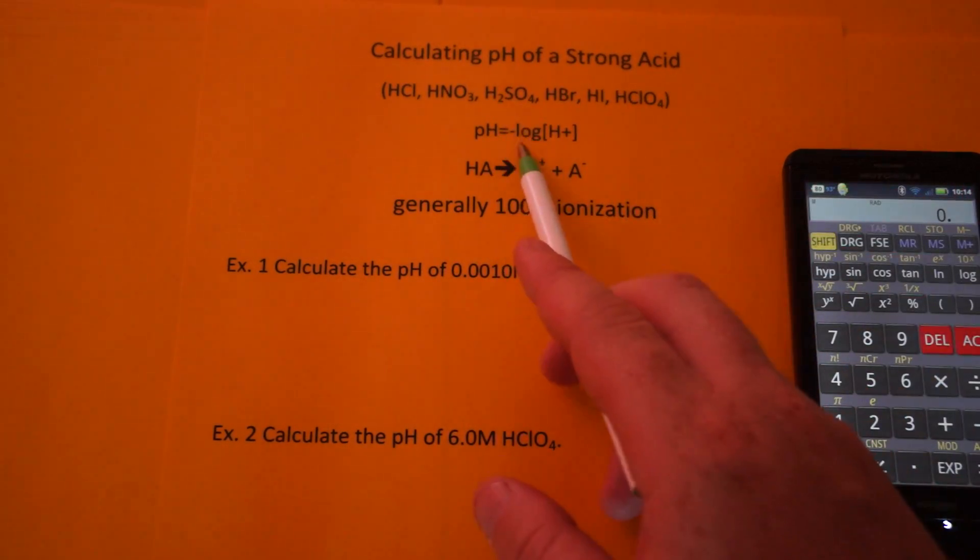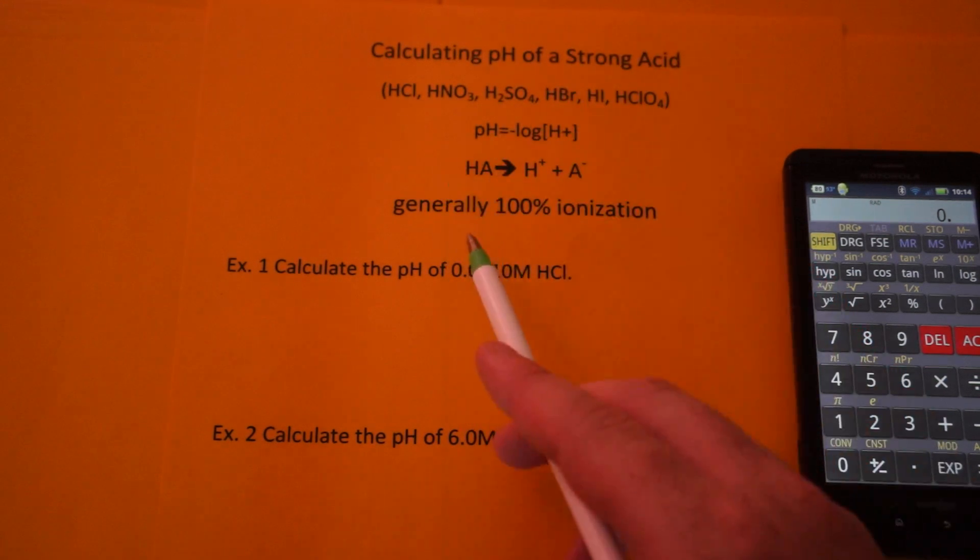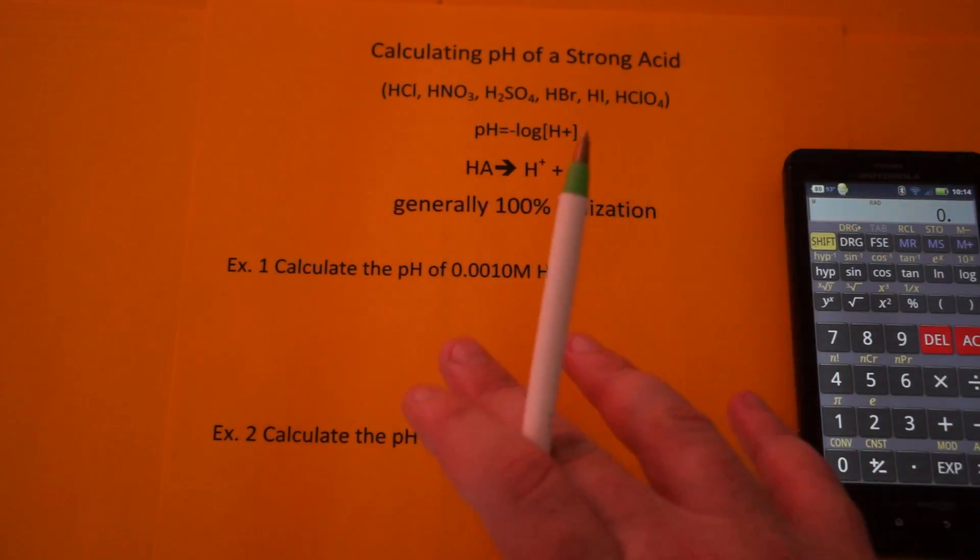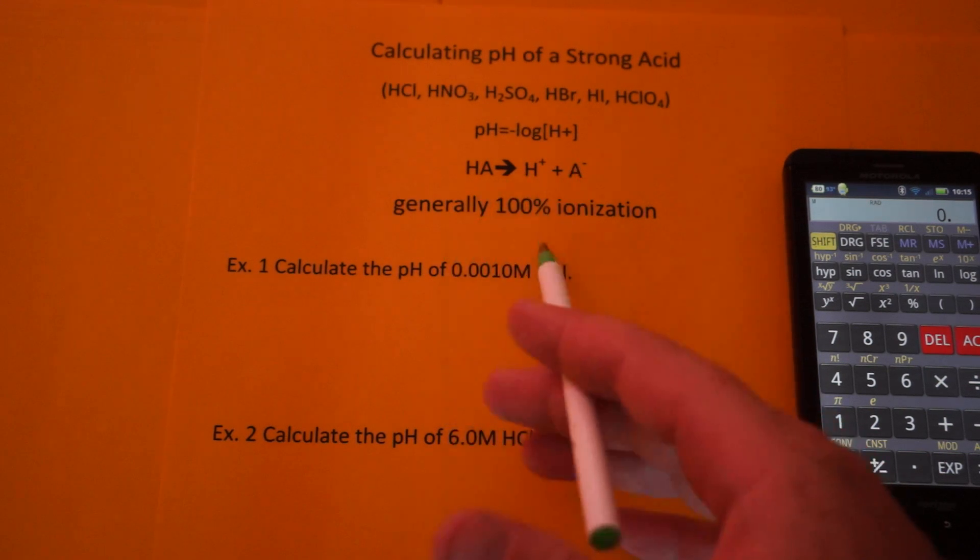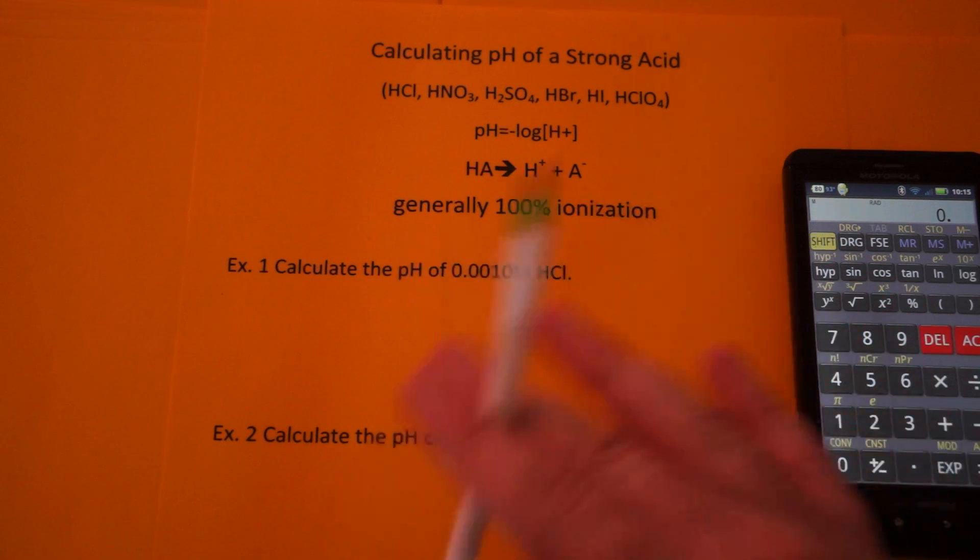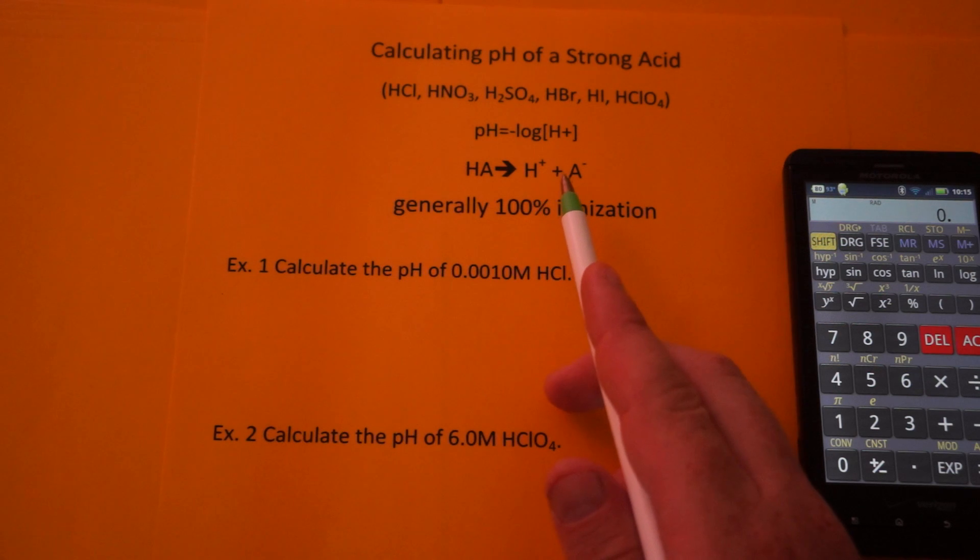In order to calculate pH, you need to take the negative log of the hydrogen ion concentration. What's interesting about strong acids is you get 100% ionization. For any molarity, you're going to get 100% ionization, which means every acid molecule breaks up into its ions. So whatever the acid concentration is, that's the H+ ion concentration.